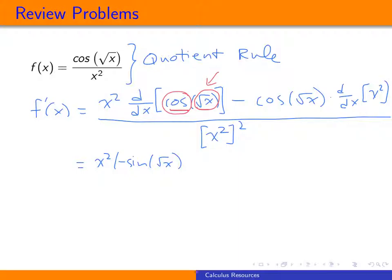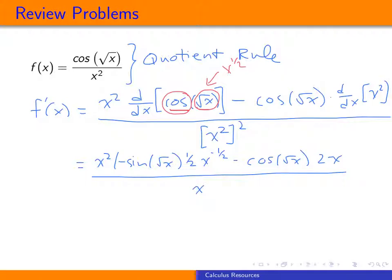Because the inside wasn't just x, we need to multiply by its derivative to finish the chain rule. Square root x is the same as x to the 1/2. To take its derivative, we pull down the exponent, giving us 1/2 times x, and subtract 1 from the exponent, leaving an exponent of negative 1/2. Then we subtract off cosine of square root x times the derivative of x squared, which by the power rule is 2x. All of that is over x to the fourth.